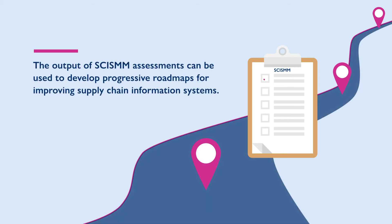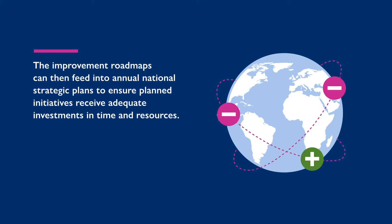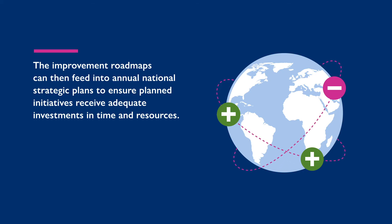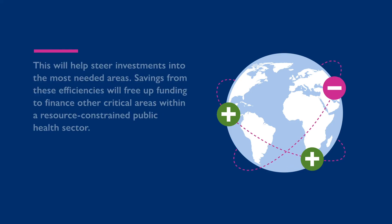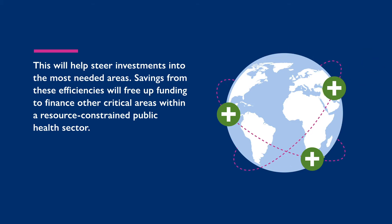The output of SCISM assessments can be used to develop progressive roadmaps for improving supply chain information systems. The improvement roadmaps can then feed into annual national strategic plans to ensure planned initiatives receive adequate investments in time and resources. This will help steer investments into the most needed areas, and savings from these efficiencies will free up funding to finance other critical areas within a resource-constrained public health sector.